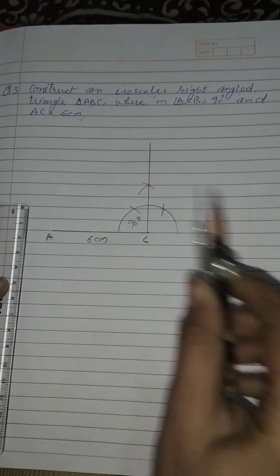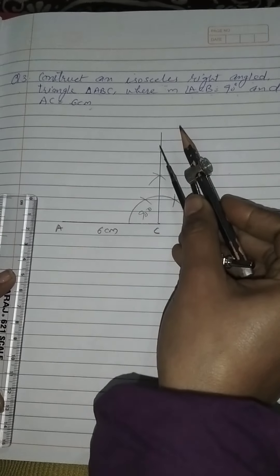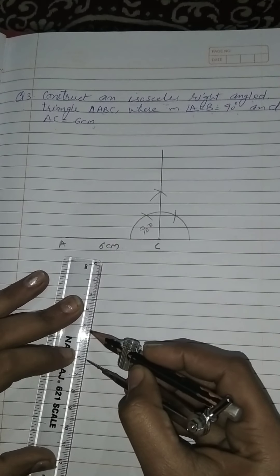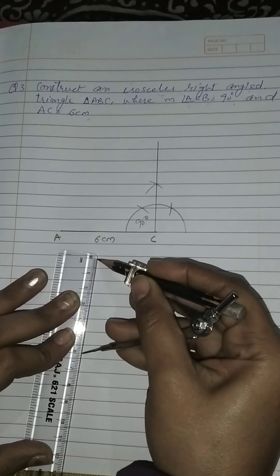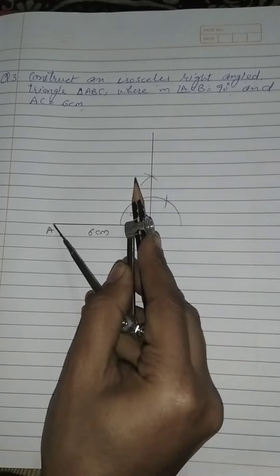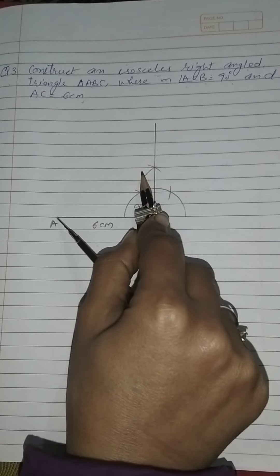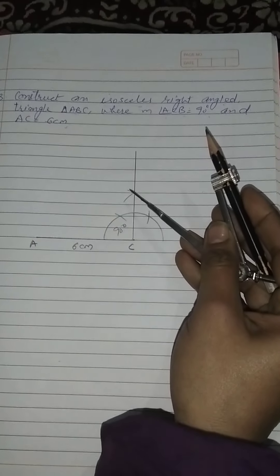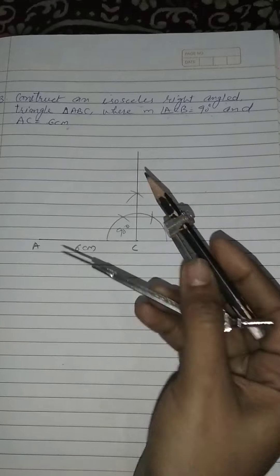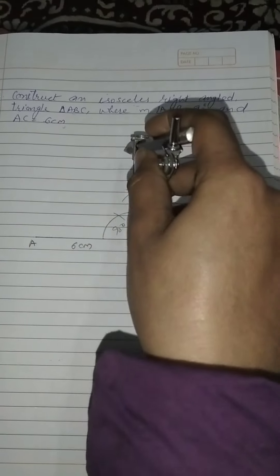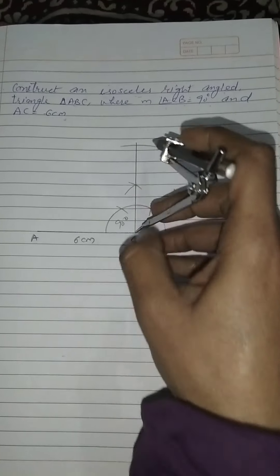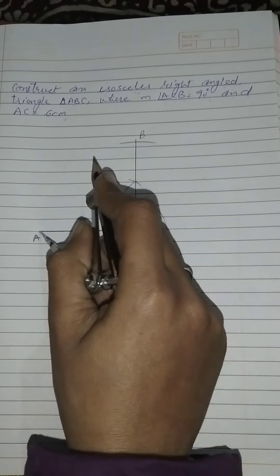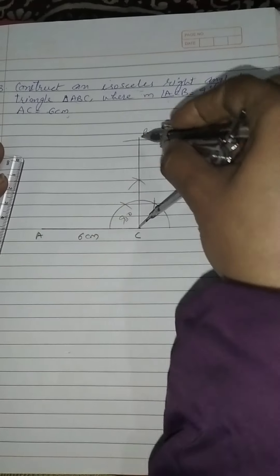Since it is isosceles, two sides are equal — if AC is 6 cm then BC is also 6 cm. So we draw 6 cm on the perpendicular line. The greatest side cannot be two sides in a triangle. If we try to draw 6 cm from point A, it will not cut the 90 degree line — meaning the hypotenuse is always greater than 6 cm when two sides are 6. So we cut 6 cm on the perpendicular line at C and name that point B.